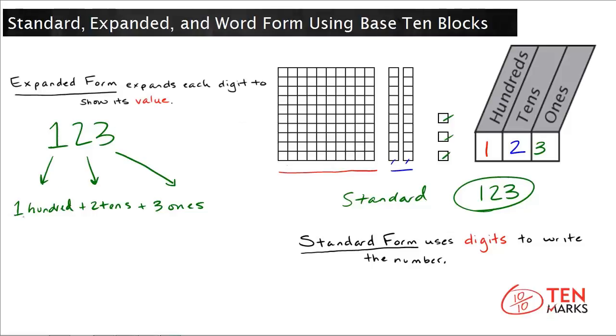So if you have 100, you have the number 100. Add this to two tens. Two tens is 20, and three ones is simply three. So the other way of writing the expanded form is 100 plus 20 plus three.